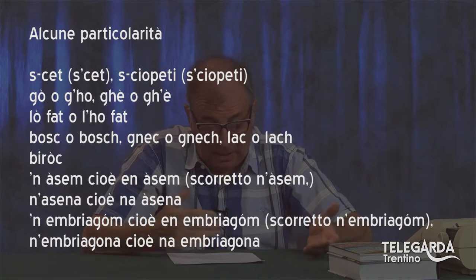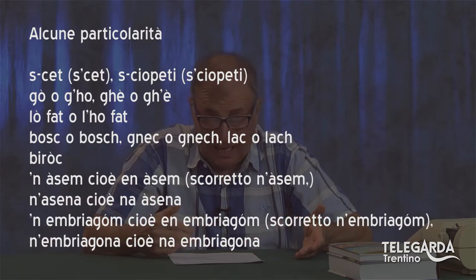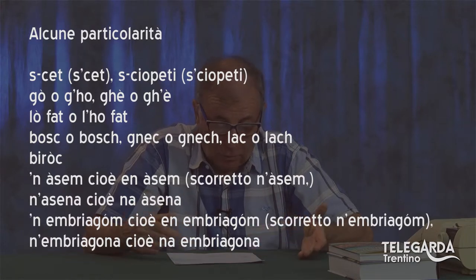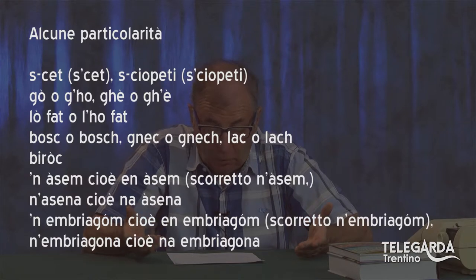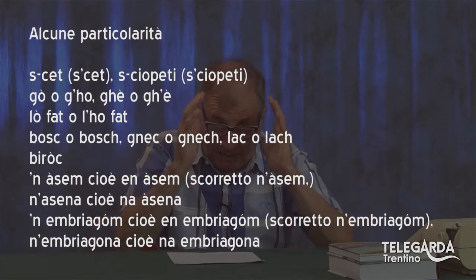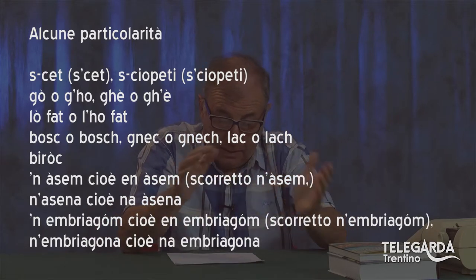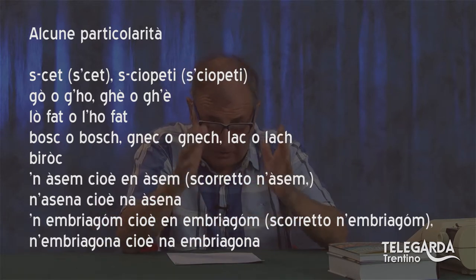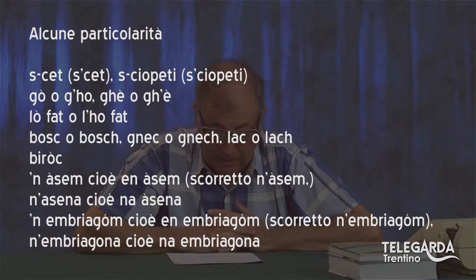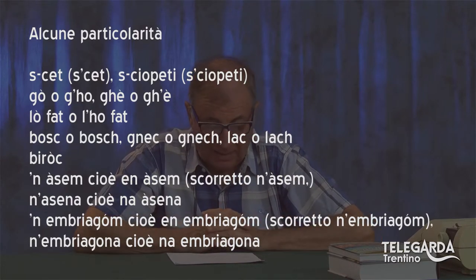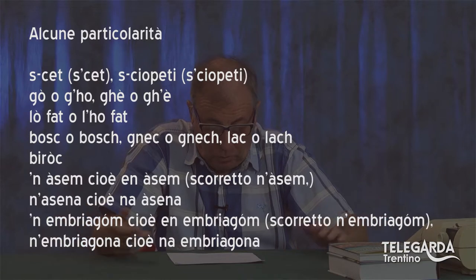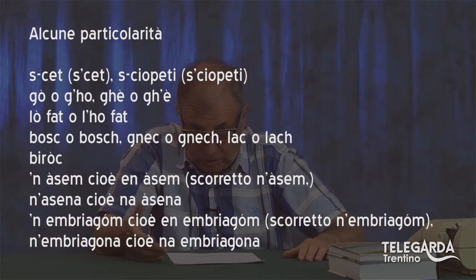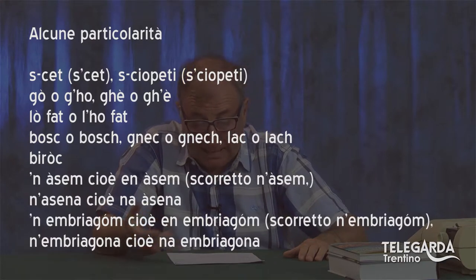Poi ci sono le forme del verbo avere ed essere: go senza H, o gò con l'apostrofo. L'importante è scegliere una di queste possibilità e non usare una forma poi l'altra: cercare di essere uniformi. L'ho fat: vedete, in due modi — lò con accento aperto sulla O, tutta una parola — oppure l'ho fat con l'apostrofo o con l'H. E poi bosch senza H o bosch con l'H; gnèc senza H o gnèch con l'H.